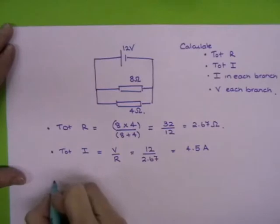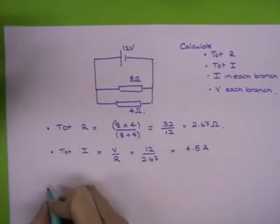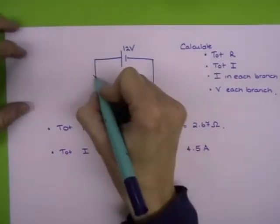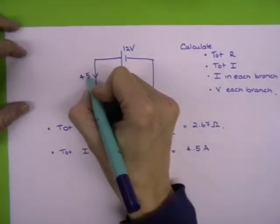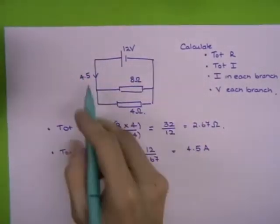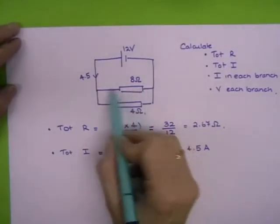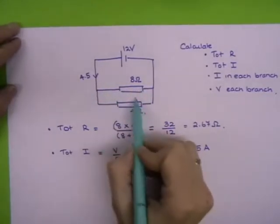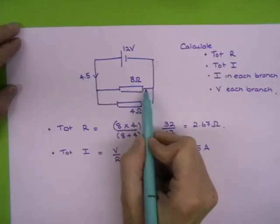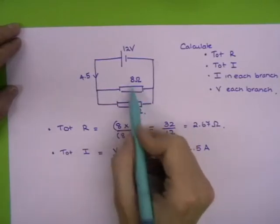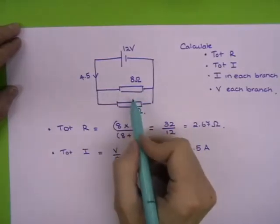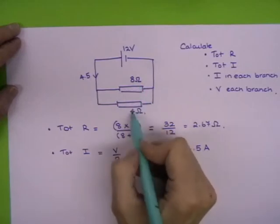Right, the next one then, we're asked for the current in each branch. Now if you can see 4.5 there, can you see how it's going to split up? This 8 ohm resistor is going to get much less current than the 4 ohms because 8 ohms is a bigger resistance. And it's going to split up in the ratio of 8 to 4, which is the same as 2 to 1.